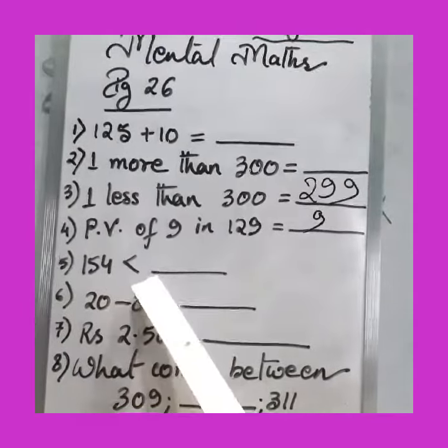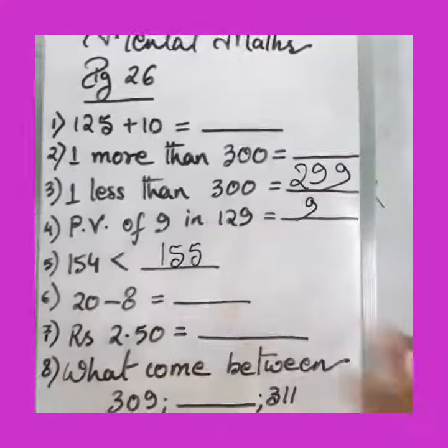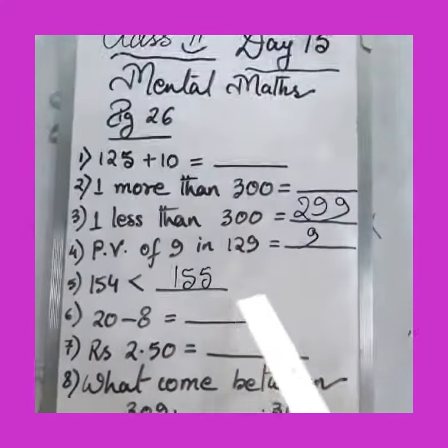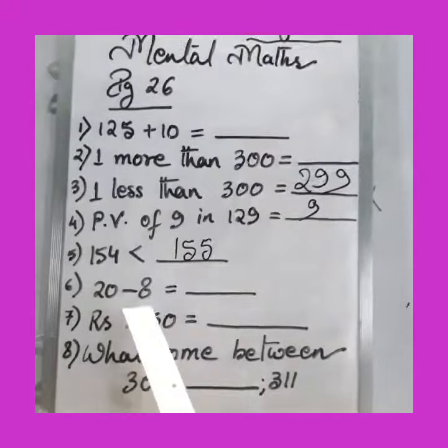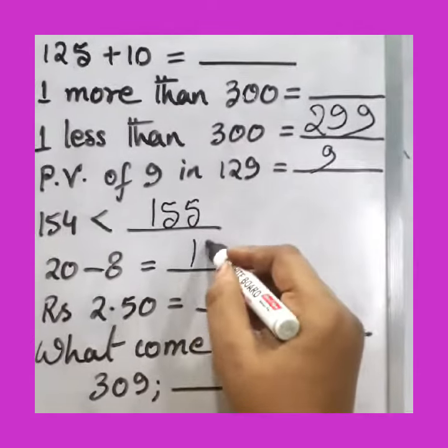154 is less than 155, 156 - any number which is greater than 154 you can write here. 20 minus 8 equals - subtract in the rough - you will get 12.